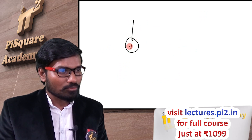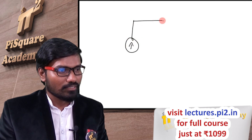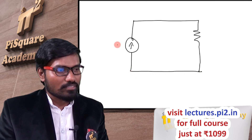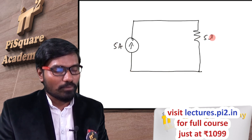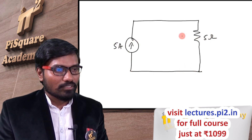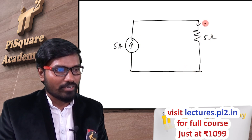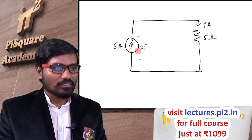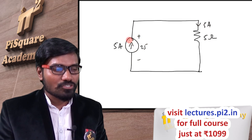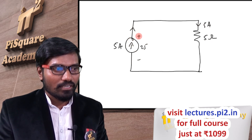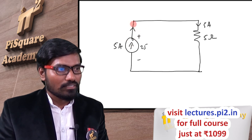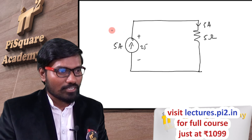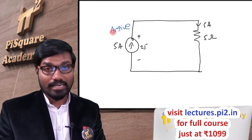Let me take a current source with a resistance. This is 5 amperes, with 5 ohm resistance. The current in this is 5 amperes, so the voltage is 25 volts. Current is leaving at the positive terminal, so this current source is now acting as an active element.